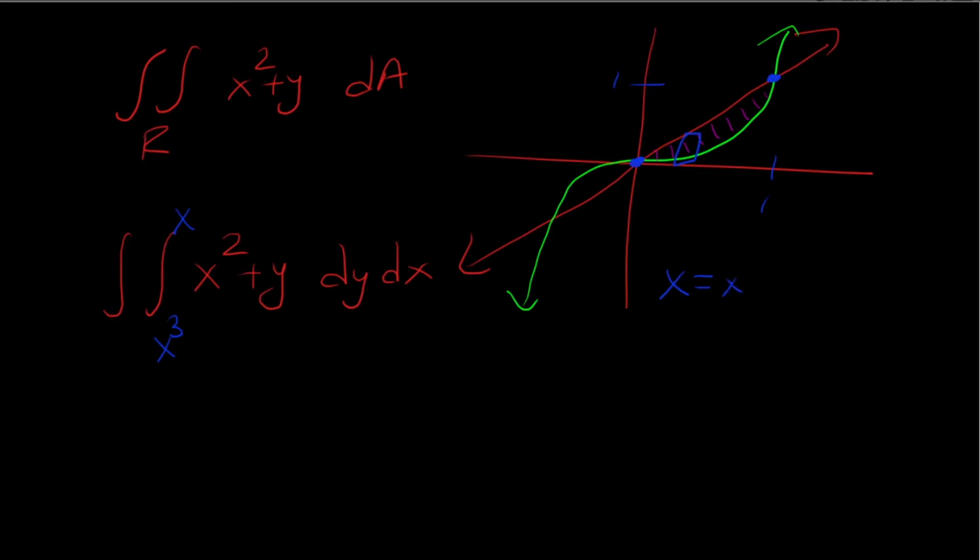You can see where they intersect by setting x equal to x cubed. So x cubed minus x equals 0, x times x squared minus 1 equals 0, and you would get x is 0 plus or minus 1. But because we're looking in the first quadrant we're going to drop the negative one.